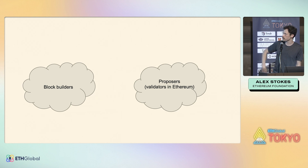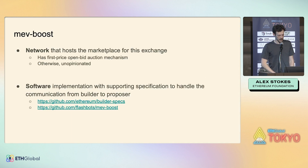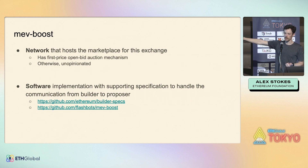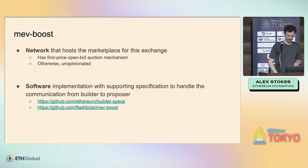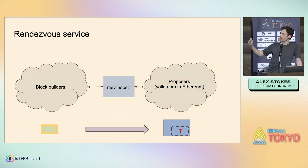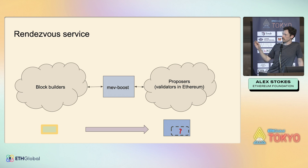We have a network of block builders who want to buy block space, and a network of proposers — validators — who want to sell it. The question is how do we connect them, and that's essentially what MEV Boost does — it provides this market abstraction. It refers both to the network that structures this exchange and the actual software. If you're a solo staker at home, you might run MEV Boost as a sidecar middleware that sits next to your setup and facilitates this MEV buying and selling. What it does is construct a rendezvous for each slot: a proposer connects to this network of builders, each builder bids for the block, and MEV Boost picks the highest bid.